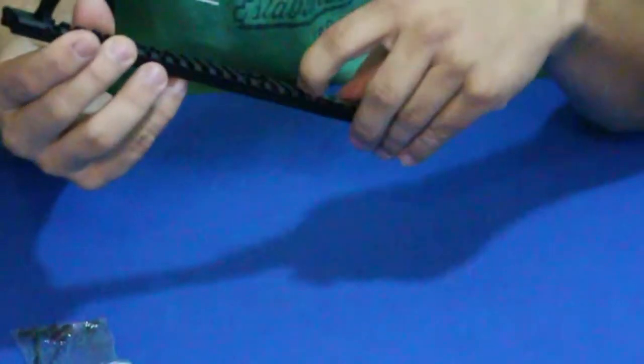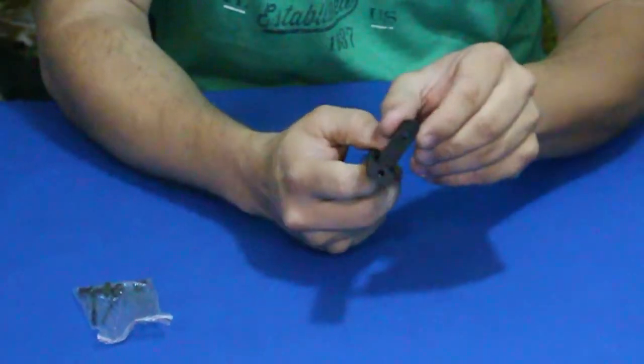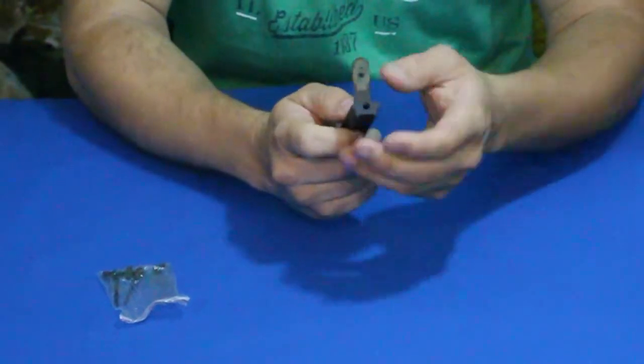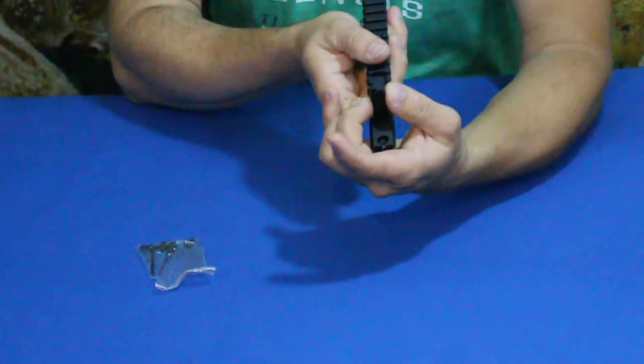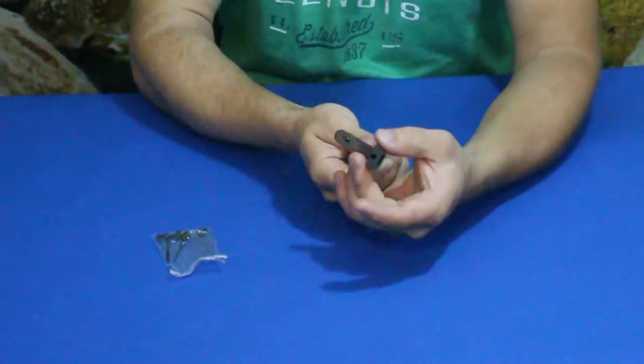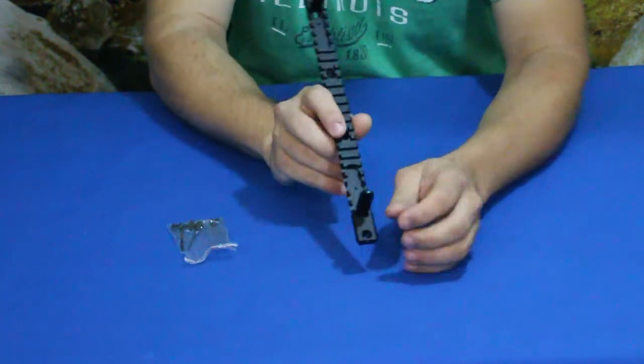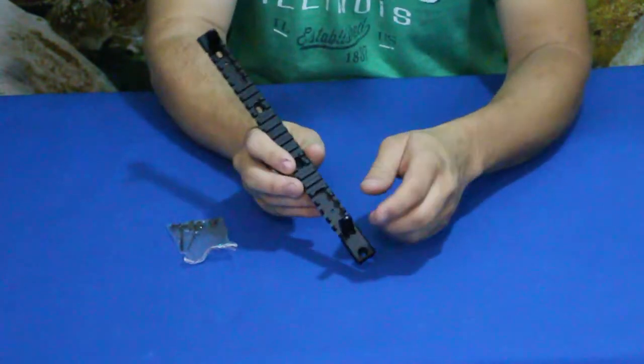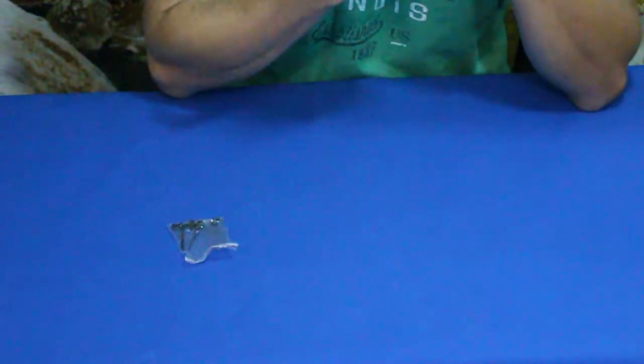And then on the back here we have just the round circle. Now the cool thing with the round circle at the back here, the peep sight, is that you can actually rotate it around and they have two different sizes here. It does adjust kind of side to side - it has a little bit of that, as you can hear maybe.